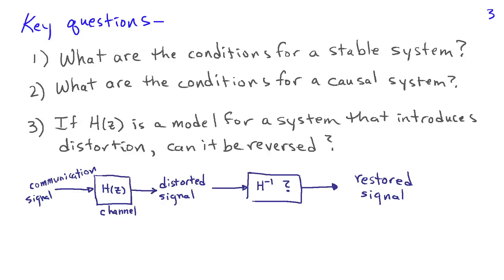Third, suppose that h of z, or the difference equation, is a model for a system that introduces distortion. We'd like to know, can that distortion be reversed? For example, if I have a communication signal and it passes through some transmission channel, like the wireless channel from your cell phone to the nearest base station, that channel or that transmission process is going to introduce distortion. And we can model that by a difference equation and use a transfer function h of z. So what you receive is a distorted signal. What we'd like to know is, can we recover the original signal by passing the distorted signal through some sort of inverse system? Does such an inverse system exist? Would it be stable? And so on. Another class of questions that we can answer using the z transform.